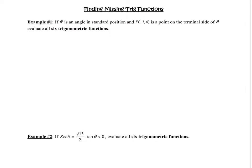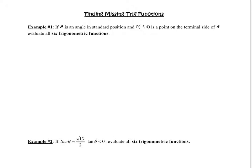Alright, question one says: if theta is an angle in standard position and point (-3, 4) is on the terminal side of the angle, evaluate all six trig functions. Let's draw it out. We graph the point at negative three, four. This is point P. The angle is in standard position, so there's an initial side and a terminal side — point P is right on that terminal side.